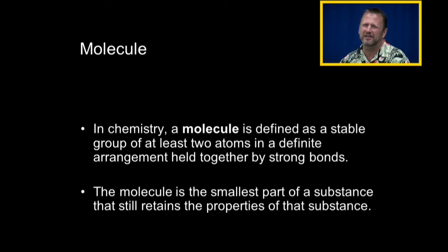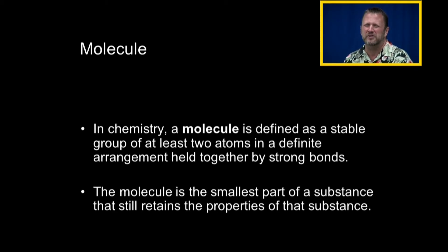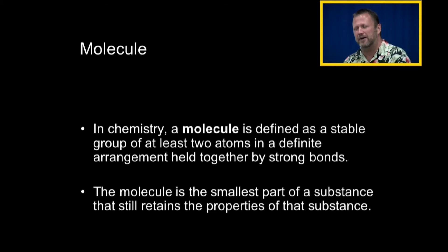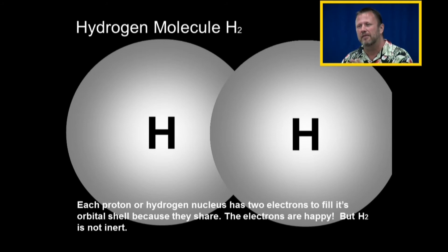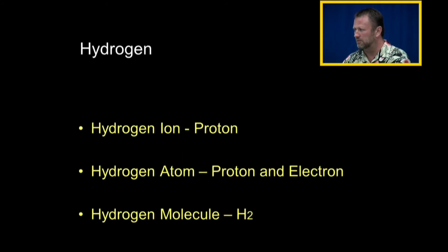The term 'molecule' in chemistry is defined as a stable group of at least two atoms in a definite arrangement held together by strong covalent bonds. A molecule is the smallest part of a substance that still retains the property of that substance. The two hydrogens put together form hydrogen gas — H2 is one hydrogen molecule made up of two hydrogen atoms. The hydrogen molecule has entirely different properties than the individual hydrogen atoms.